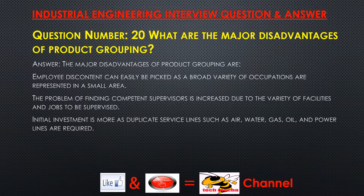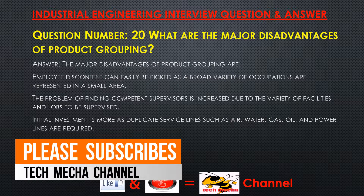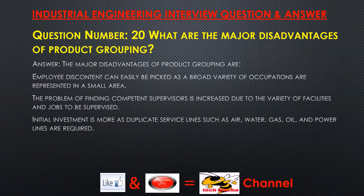Question number 20: What are the major disadvantages of product grouping? Answer. The major disadvantages of product grouping are: employee discontent can easily be picked up as a broad variety of occupations are represented in a small area; the problem of finding competent supervisors is increased due to the variety of facilities and jobs to be supervised; and initial investment is more as duplicate service lines such as air, water, gas, oil, and power lines are required.